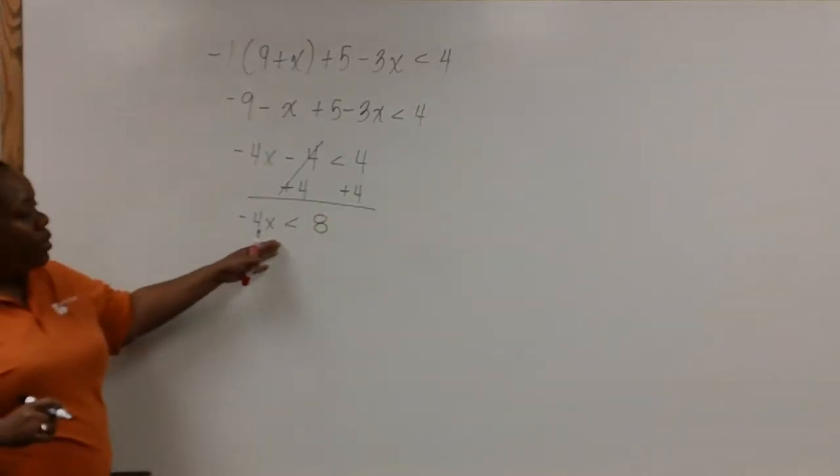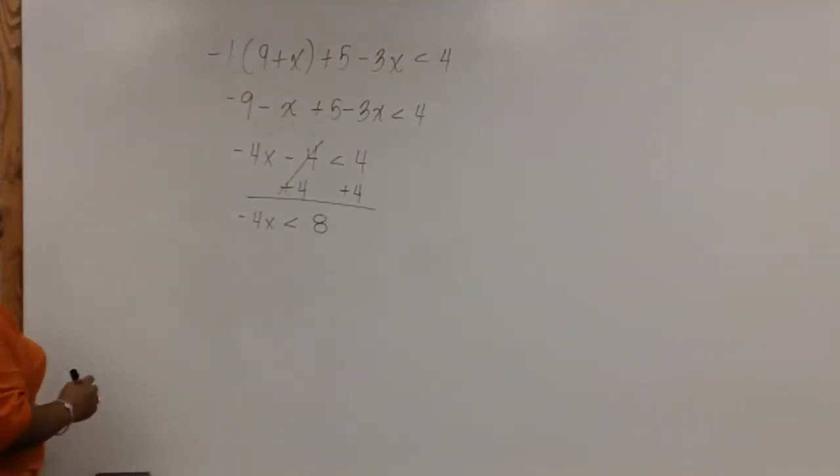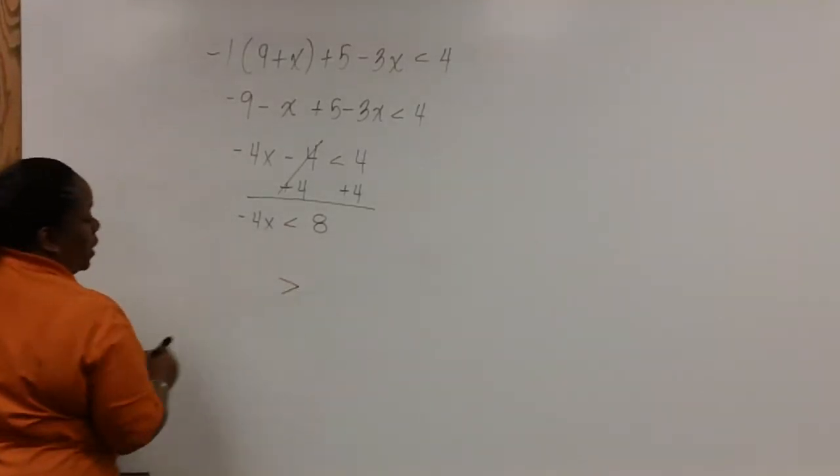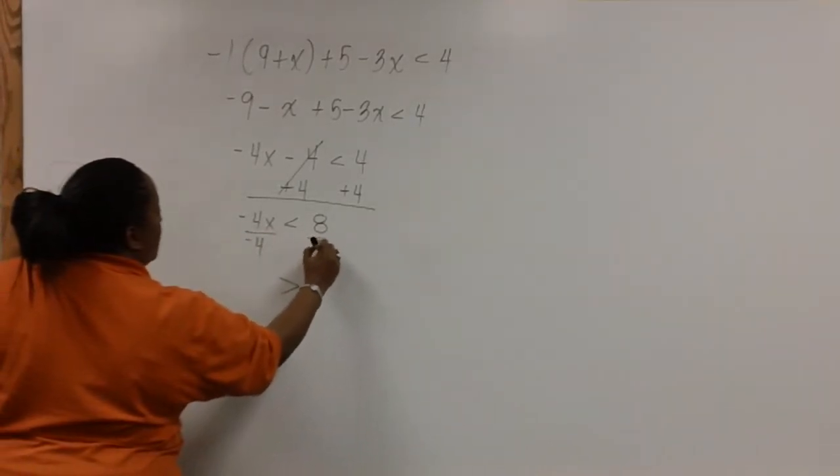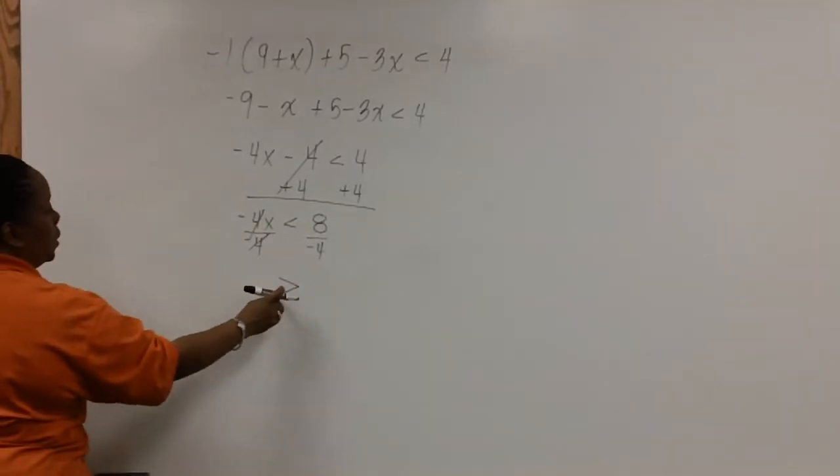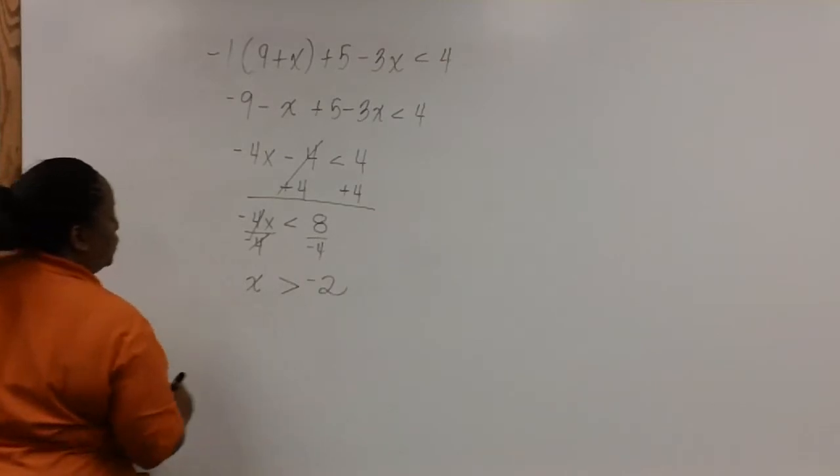Now be careful here. Our next step is to divide both sides by a negative. So what that means is that this inequality is about to change direction. So after dividing both sides by negative 4, the inequality will change direction. And we get x is greater than negative 2.